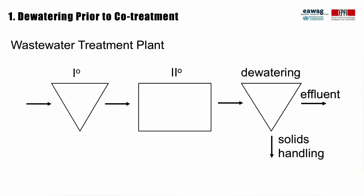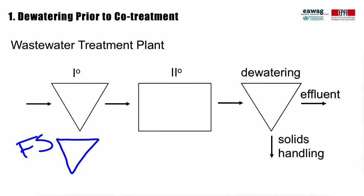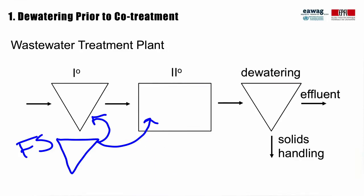The preferred option for co-treatment is starting with dewatering of fecal sludge. This could include settling thickening tanks, drying beds, or mechanical dewatering. If you are looking for fecal sludge dewatering solutions prior to the development of additional infrastructure, temporary options like geotextile bags could be considered. The effluent could then either go into primary or secondary treatment for co-treatment with the wastewater, depending on the characteristics. And the solids could then be co-treated together with the waste sludge or biosolids. With this option, ways to increase dewatering and drying of both solid streams could be investigated, thereby increasing the treatment capacity of the plant.